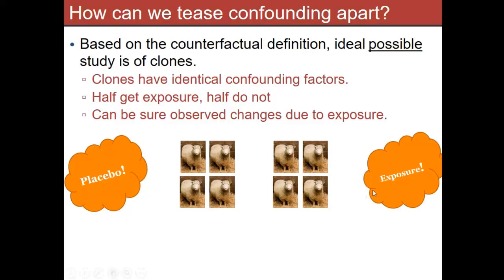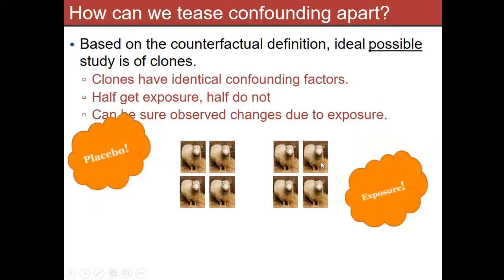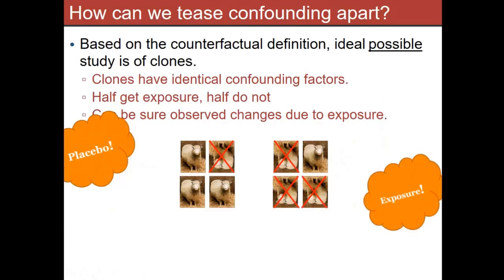We can't do this with humans — we don't clone people. We do things like twin studies, which is maybe the closest thing. The basic idea is if you have a twin study, within a given matched pair, you're controlling for a lot — the same genetics, the same environment more or less. If you enrolled three or more sets of identical twins, you're sort of getting close to the sheep situation. If you gave half the exposure and the other half not, the groups sort of have the same mix of confounders on average — the sex distribution on the left is the same as the sex distribution on the right.